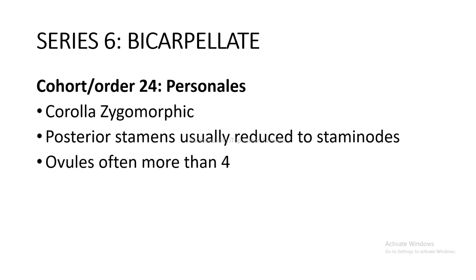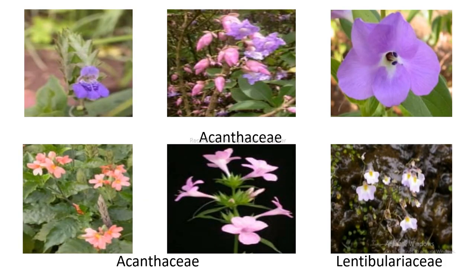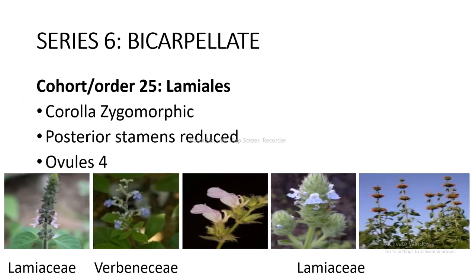Cohort and order 24 Personales — corolla actinomorphic, posterior stamens usually reduced to staminodes, ovules more than four — includes Bignoniaceae, Acanthaceae, and Lentibulariaceae as shown in the figure. Cohort and order 25 Lamiales — corolla zygomorphic, posterior stamens reduced, ovules are four — includes Lamiaceae and Verbenaceae as shown in the figure.